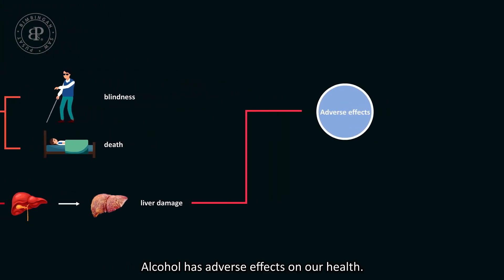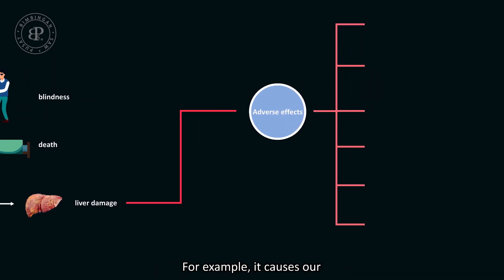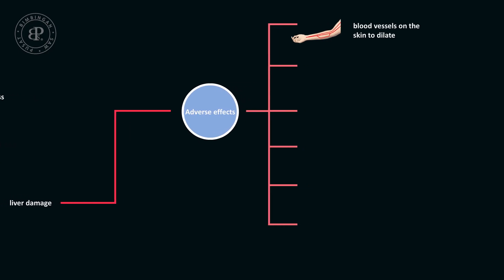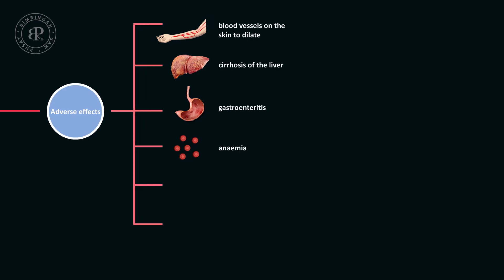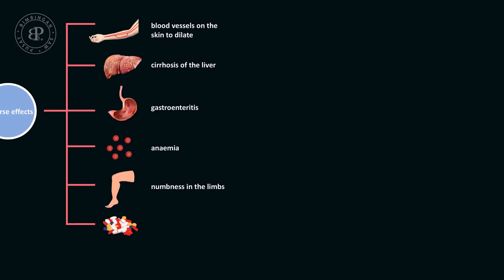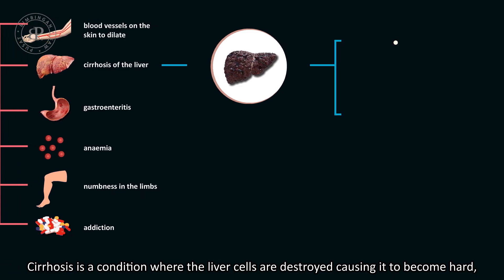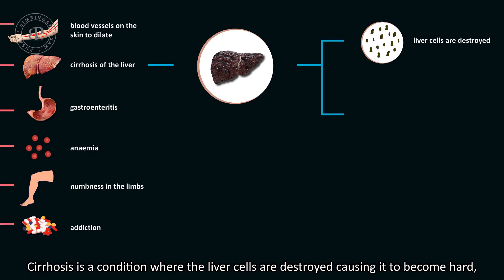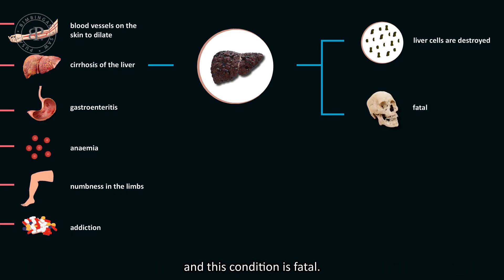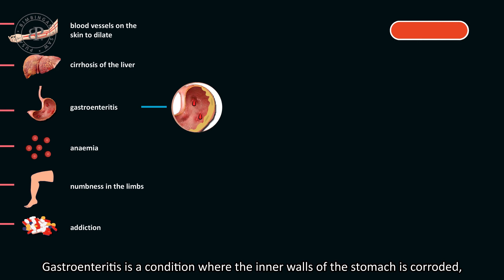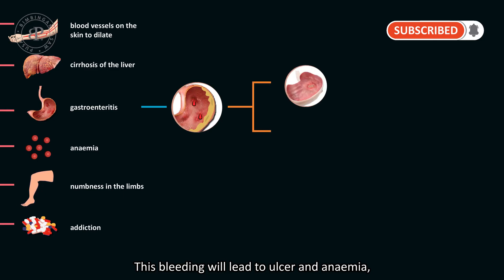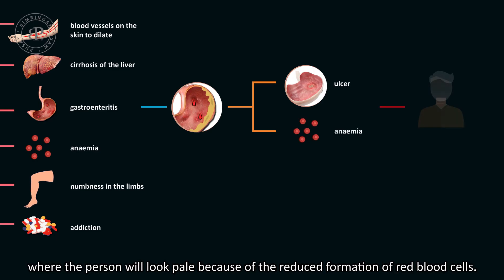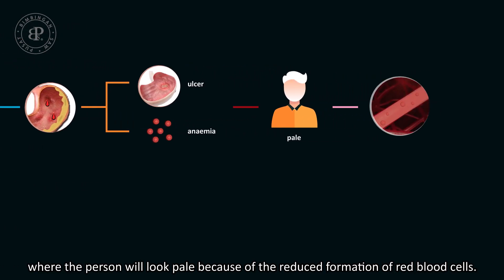Alcohol has adverse effects on our health. It causes blood vessels on the skin to dilate, cirrhosis of the liver, gastroenteritis, anemia, numbness in the limbs, and addiction. Cirrhosis is a condition where the liver cells are destroyed, causing it to become hard, and this condition is fatal. Gastroenteritis is a condition where the inner walls of the stomach are corroded, causing them to bleed, leading to ulcer and anemia, where the person looks pale due to reduced formation of red blood cells.